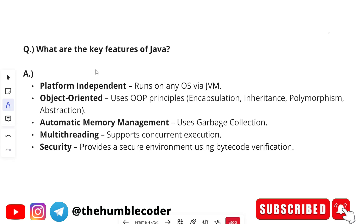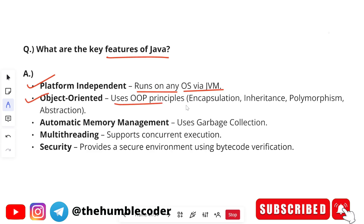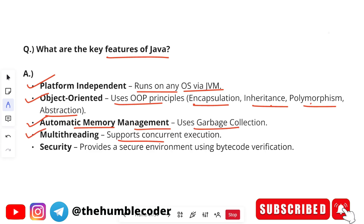The next question is: what are the key features of Java? Platform independent — it runs on any operating system via the Java Virtual Machine. Object-oriented — it uses OOP principles like encapsulation, inheritance, polymorphism, and abstraction. Note that after this, the interviewer may ask you to explain those object-oriented concepts. Automatic memory management — Java uses garbage collection. Multi-threading — it supports concurrent execution. Security — Java provides a secure environment through bytecode verification.